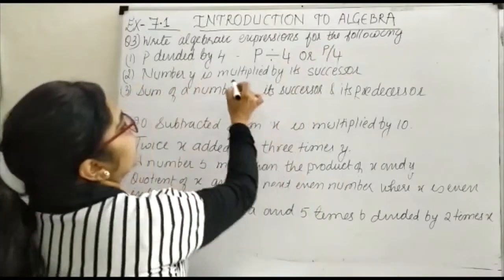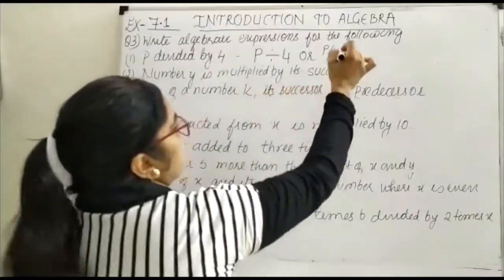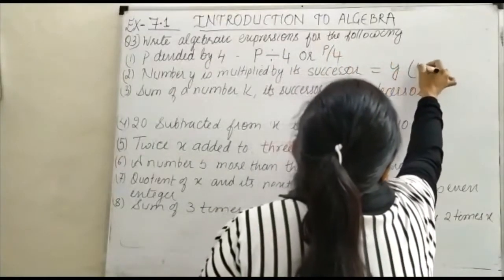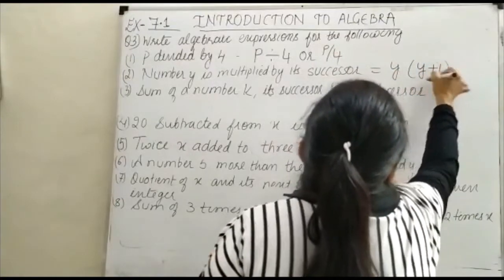Next, number Y is multiplied by its successor. So this will be equal to Y times (Y + 1). It is multiplied.